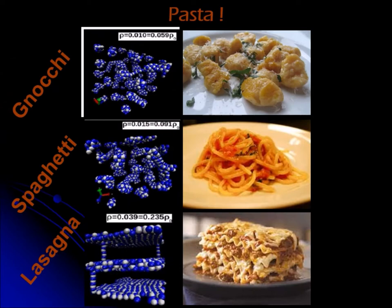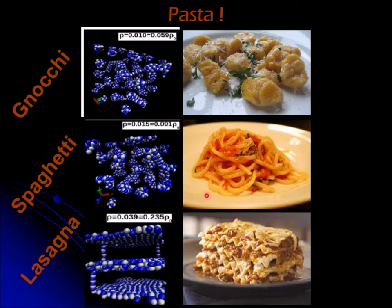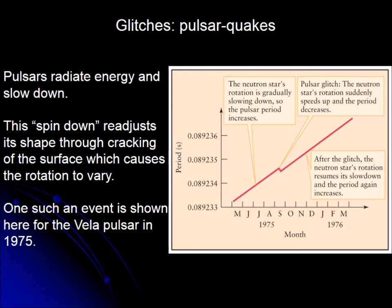These structures are known as pastas and they have different shapes. We see here three of them. For some densities and temperatures the protons and neutrons form layers connected by bridges — this resembles an Italian dish, the lasagna. At some higher densities, about one-tenth of the nuclear density, they form long tubes that can be taken as spaghetti, and small balls that can be taken as gnocchi. This particular article was selected as article of the month by Physical Review.